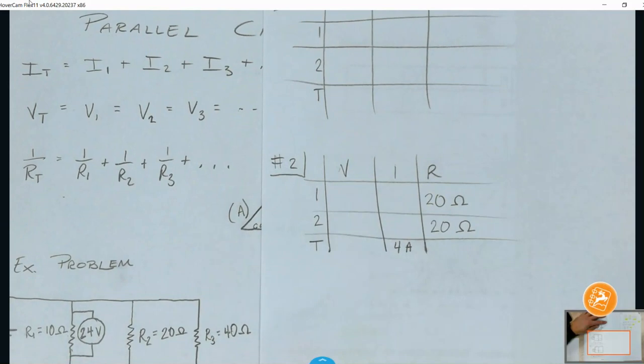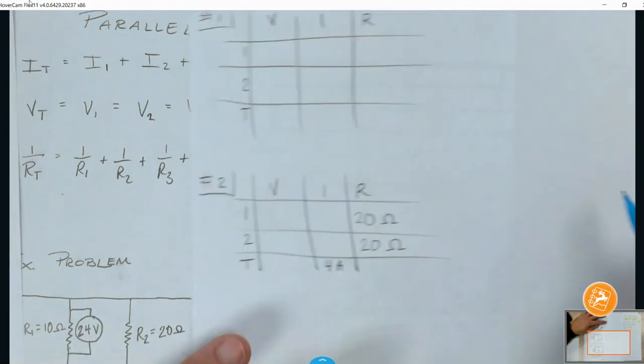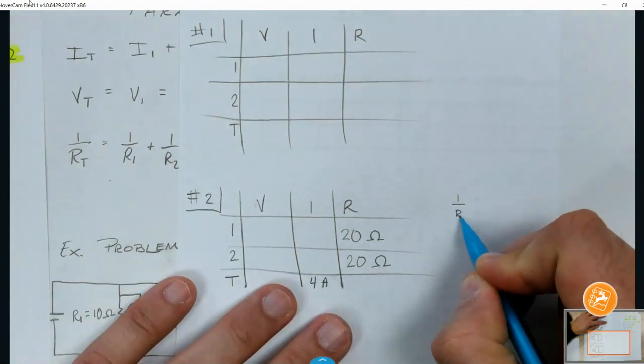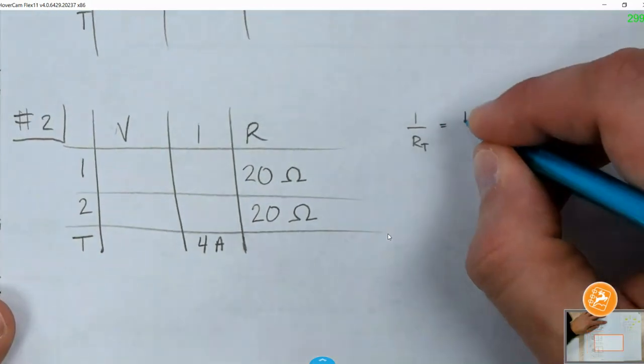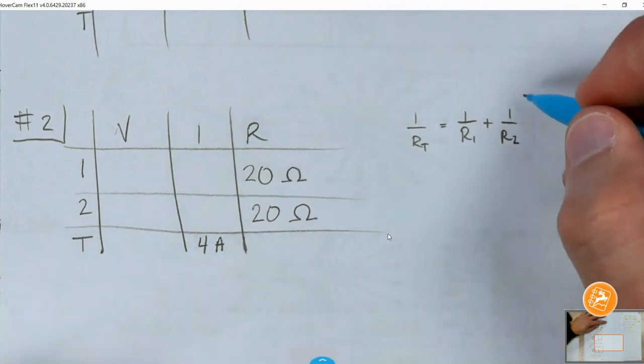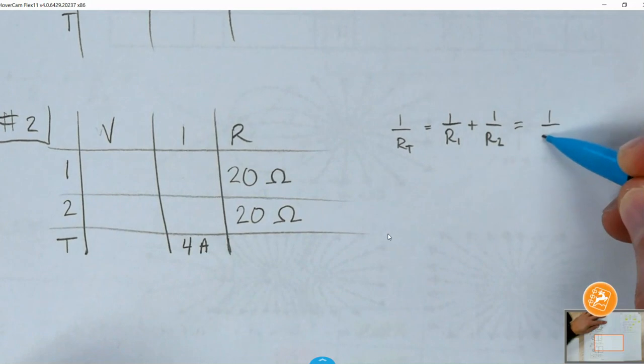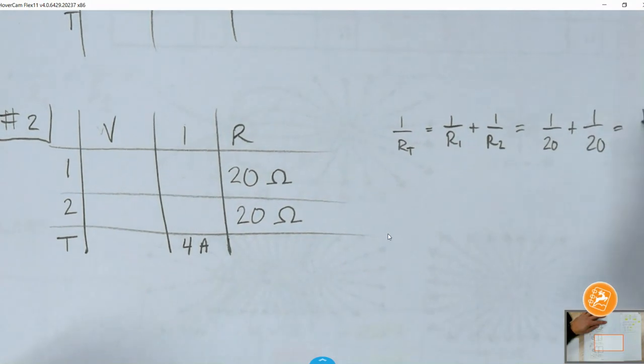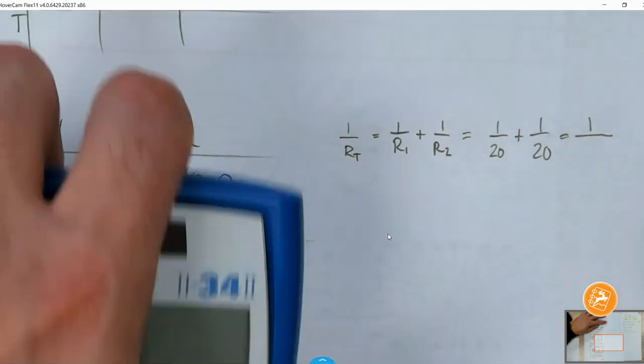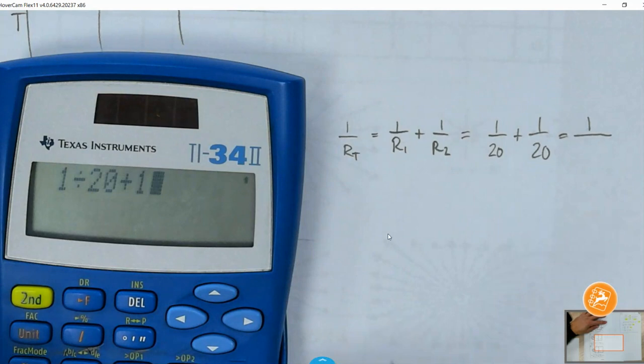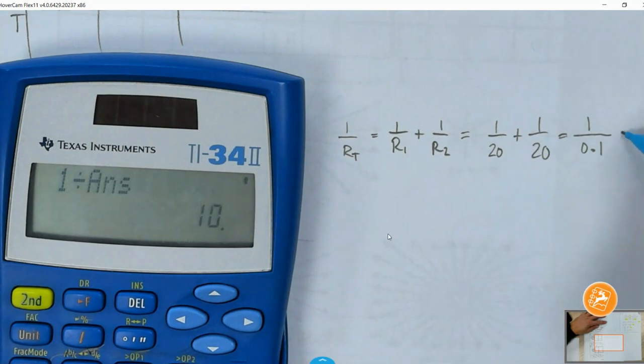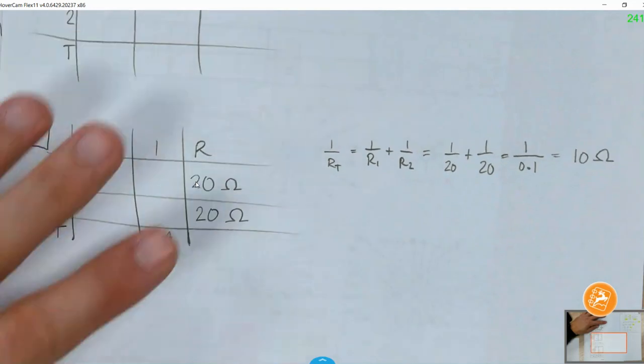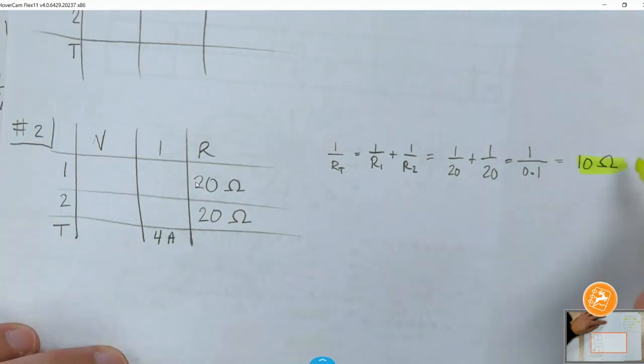So the first thing that you're going to want to be doing is you're going to have to use that equation: 1 over RT is going to be equal to 1 over R1 plus 1 over R2. So in your calculators, we're going to do 1 divided by 20 plus 1 divided by 20. That's going to equal 1 divided by whatever that answer is because we have to take the reciprocal. 1 divided by 20 plus 0.1, 1 divided by that answer and boom, we get 10 Ohms. So 10 Ohms we actually had to do math for. That is going to go right here.